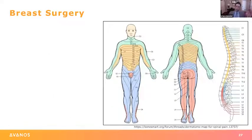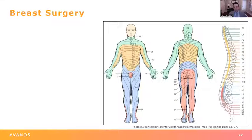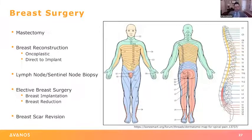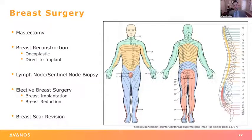Our progression of bringing these into practice started with breast surgery. We were already doing paravertebral catheters for breast surgeons, but they're time consuming, uncomfortable for patients, and uncomfortable for anesthesia staff — you're close to the lung, you don't always get a great view, and it's hard to thread the catheter. So we switched to ESP catheters for all breast procedures: mastectomies, reconstructions, lymph node dissections, elective breast surgeries like implants and reductions and scar revisions. The added benefit we didn't necessarily expect was that we also captured the axilla for axillary lymph node dissections and sentinel lymph node biopsies. We missed that with the paravertebral blocks, but we don't miss it with ESP blocks.